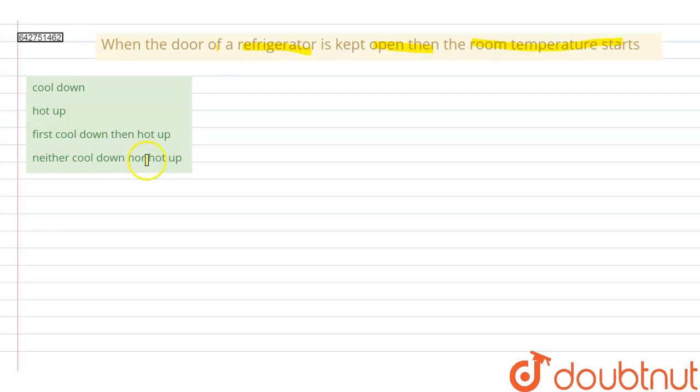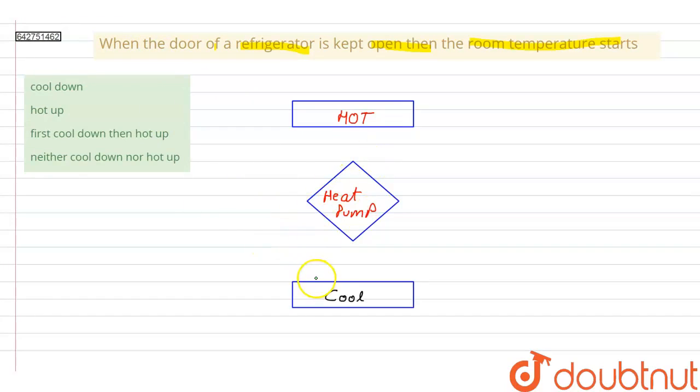So let us understand with the concept of a heat pump, because this is the concept on which a refrigerator works. So here we have a representation of a heat pump, and it works in the opposite direction with respect to the heat engine.